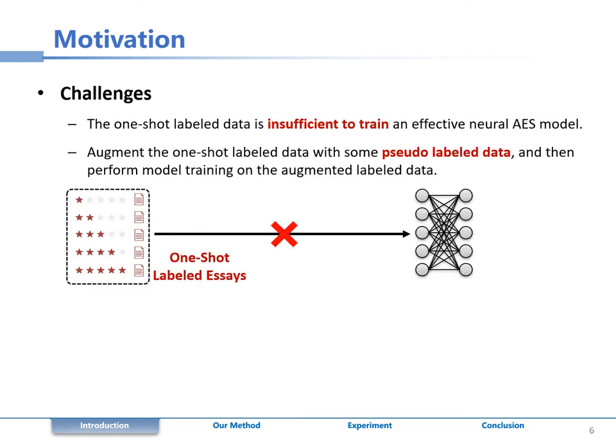One-shot AES is a challenging task since the one-shot labeled data is insufficient to train an effective neural AES model.